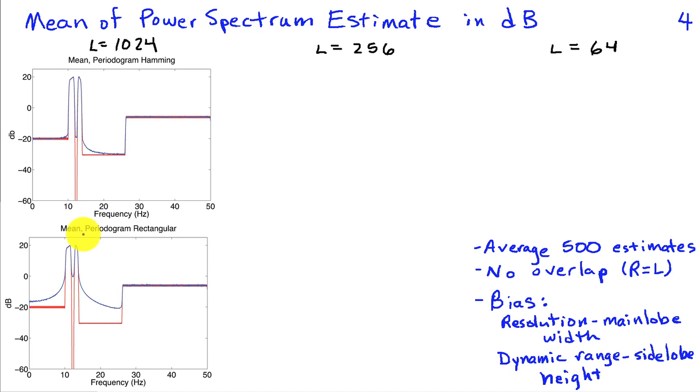Now the periodogram, I'm sorry, I meant with the rectangular window. Now the rectangular window should have higher resolution. And indeed, if one looks really close, you might be able to see that it tracks these peaks a little better, and it might track this edge a little better. But the dominant effect in this L equal 1024 case is the dynamic range.